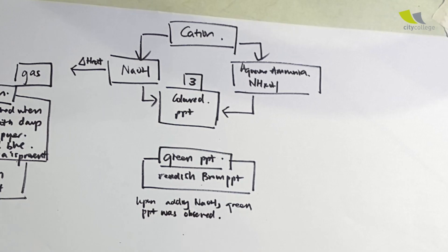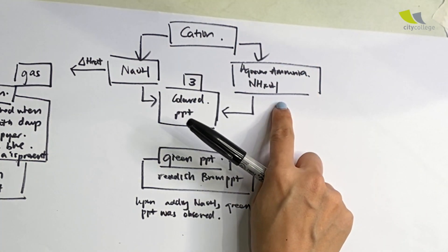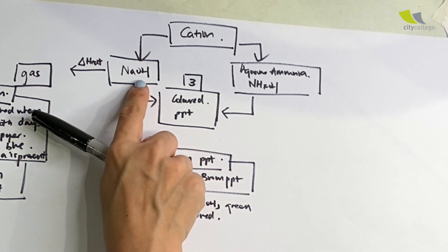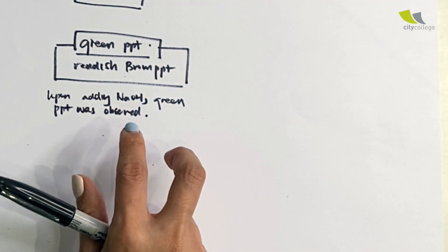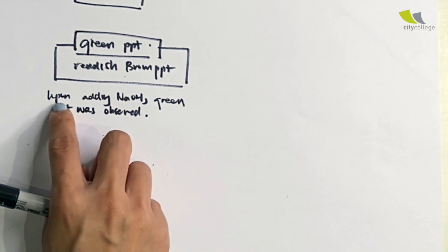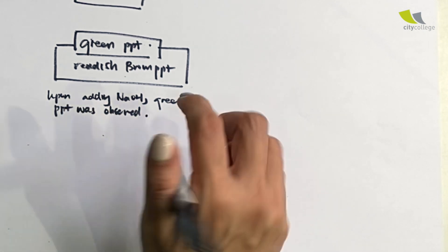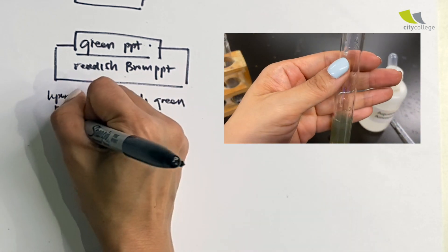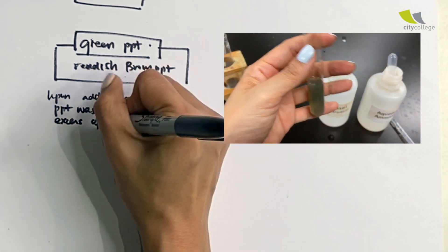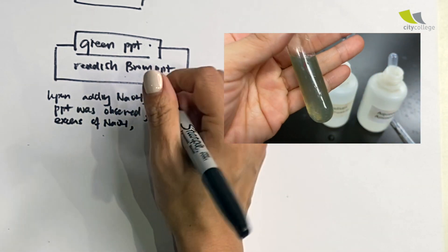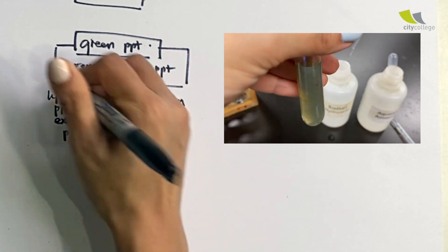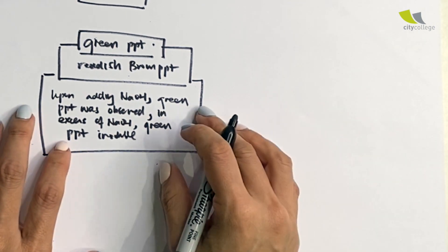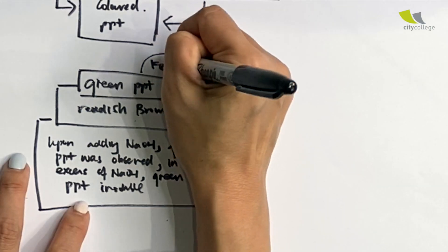Bear in mind, every time when you add NaOH or NH4OH, very often they will say add dropwise of NaOH and add until no further changes is seen. It goes to show that you need to add an excess. Upon adding NaOH, green precipitate was observed, and in excess of NaOH, green precipitate insoluble.